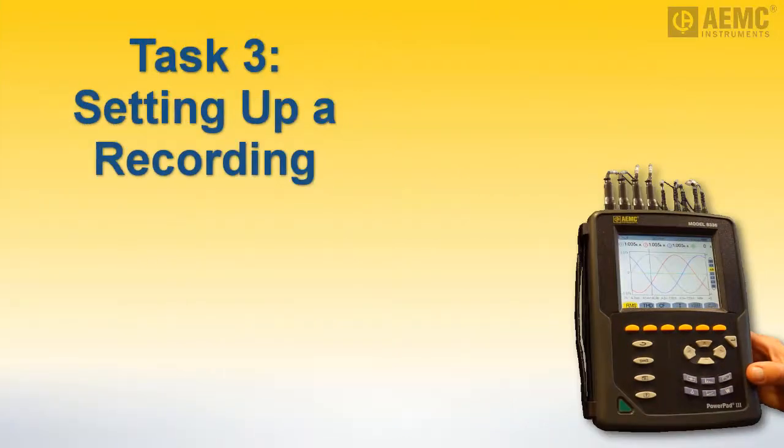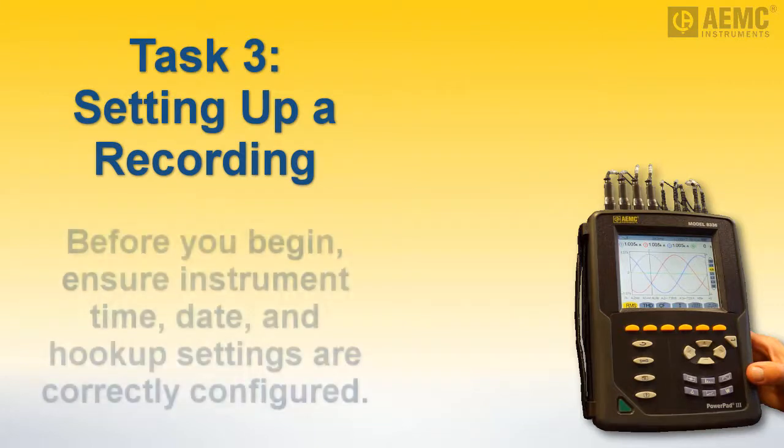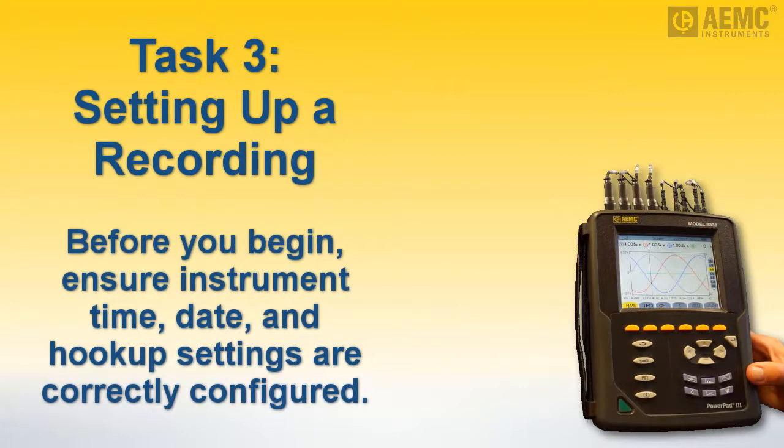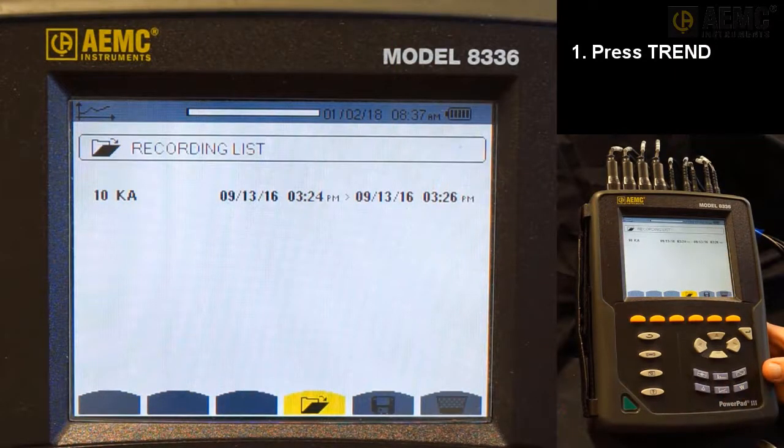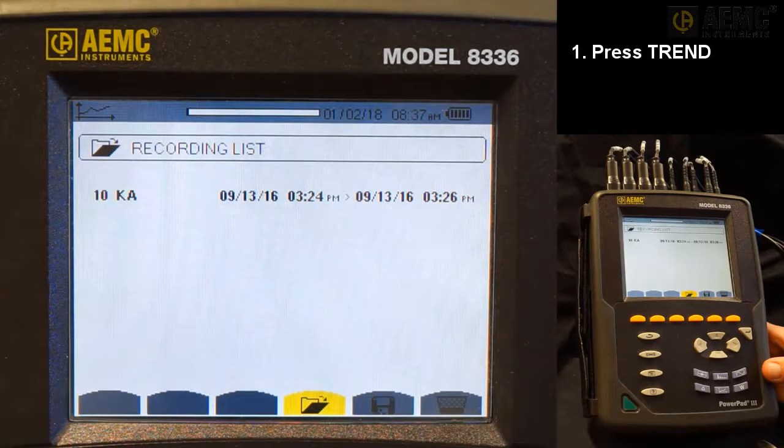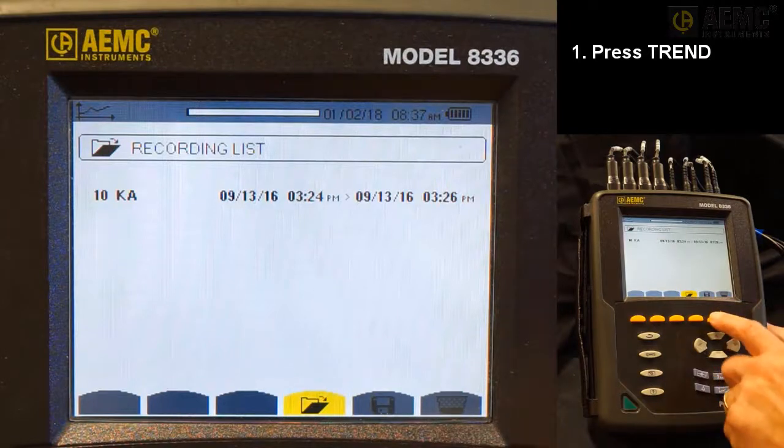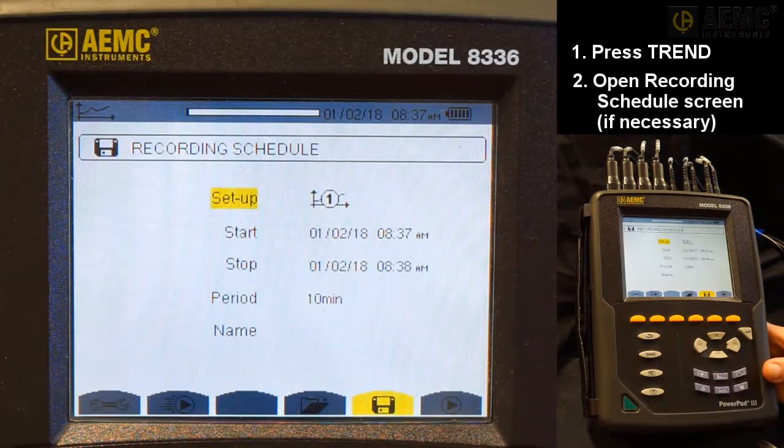Before setting up a recording session on the Model 8336, ensure the instrument time and date are correct. Also, ensure the appropriate hookup setting is selected. These topics are covered earlier in this video. Press the Trend Mode button. If there are no recordings stored in the instrument, the Recording Scheduled screen appears. If there are stored recordings, as is the case here, the Recording List screen is displayed. In this situation, press the yellow Function button under the disk icon to display the Recording Scheduled screen.